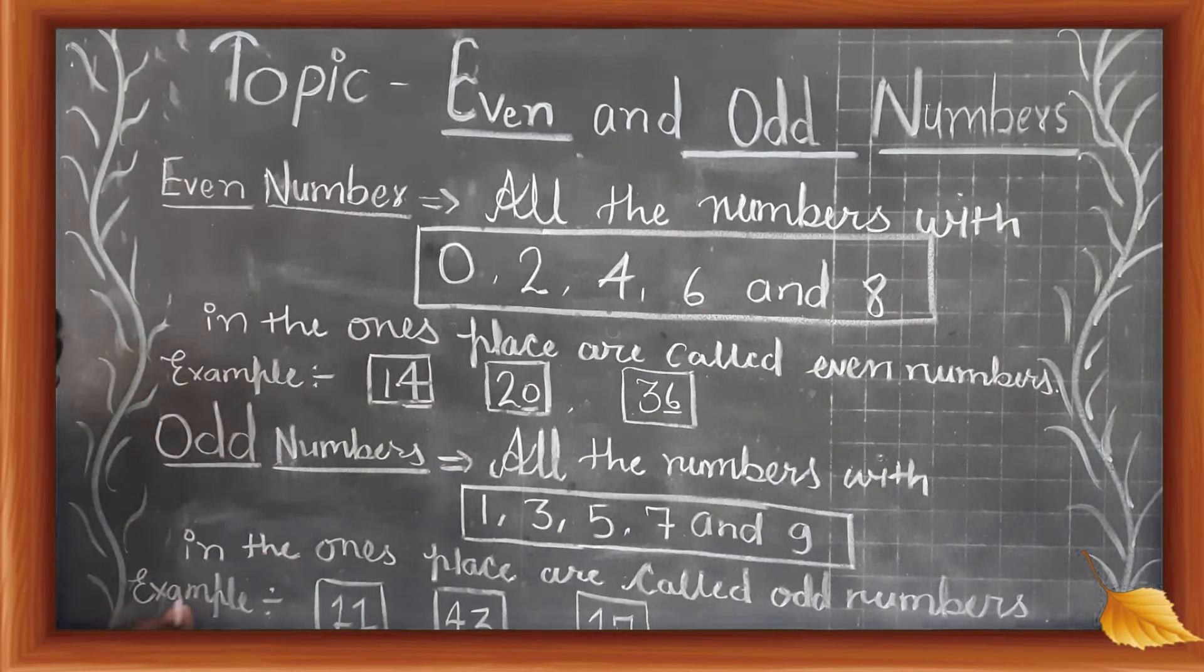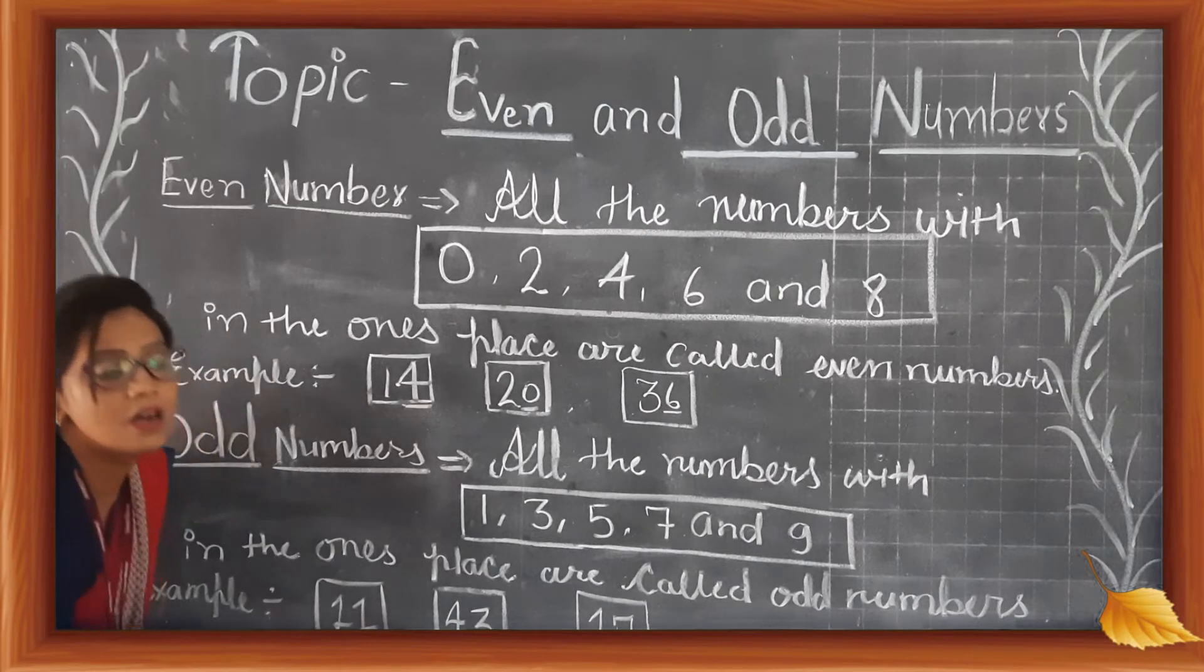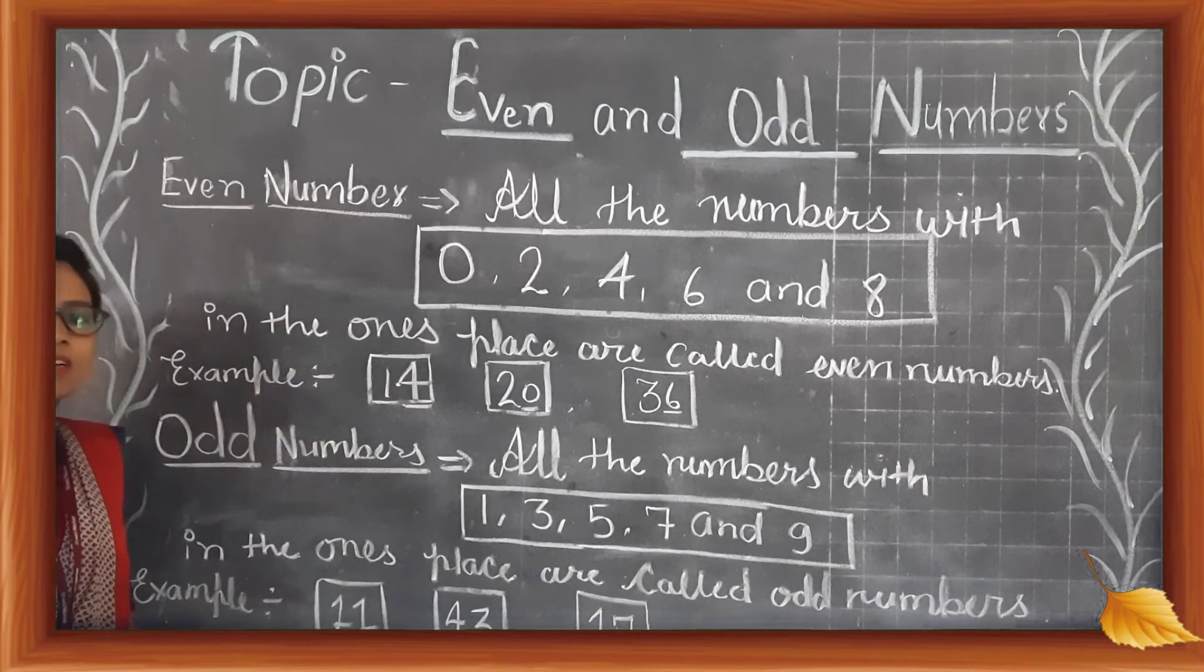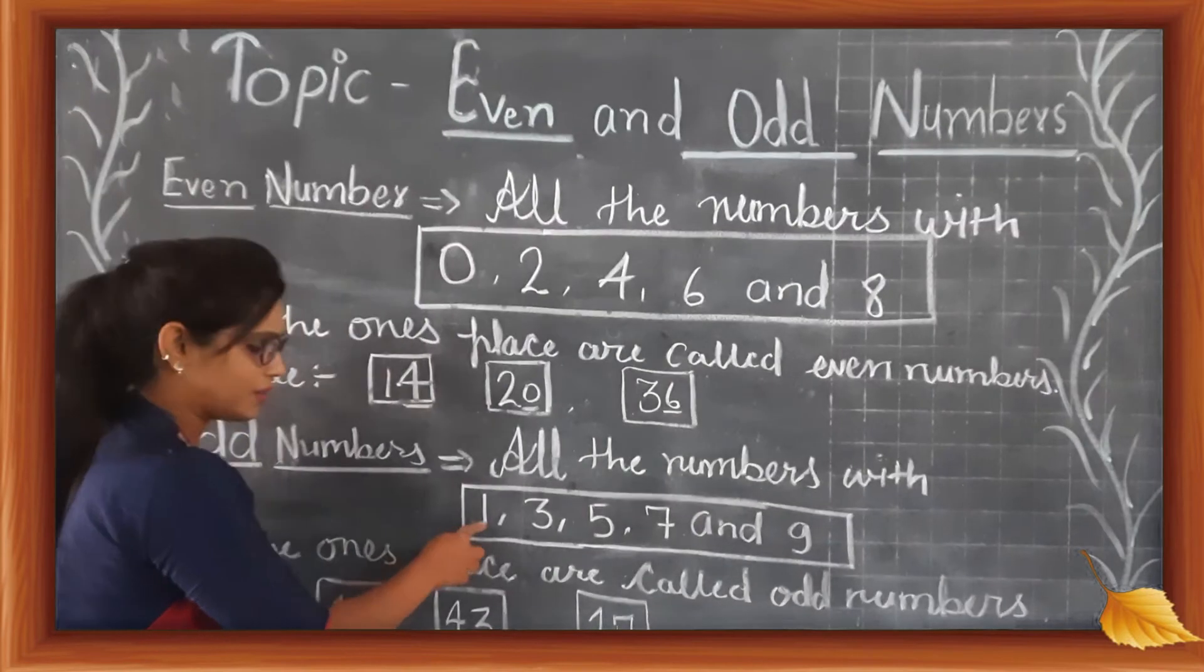Let's see. Take for example 11. In the ones place is 1. One is an odd number, so 11 is an odd number.